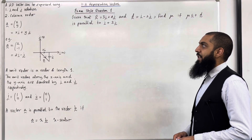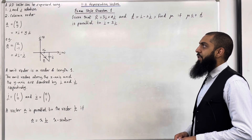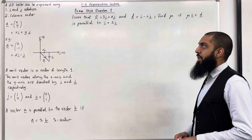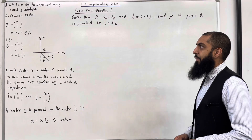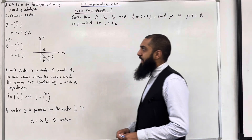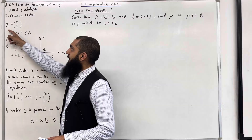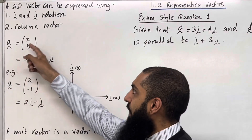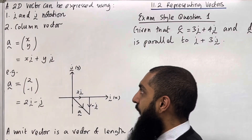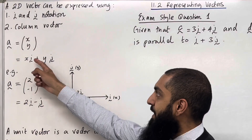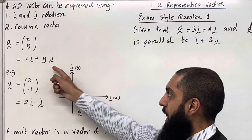A 2D vector can be expressed using, number 1, i and j notation, or number 2, column vector form. Consider the vector a. As a column vector you can write this as (x, y), and in i j notation this is written as xi + yj.